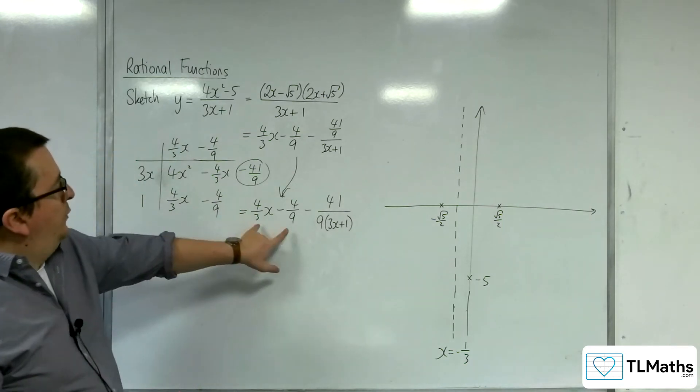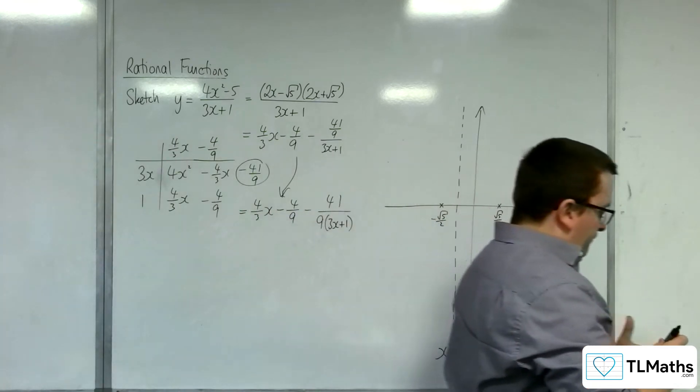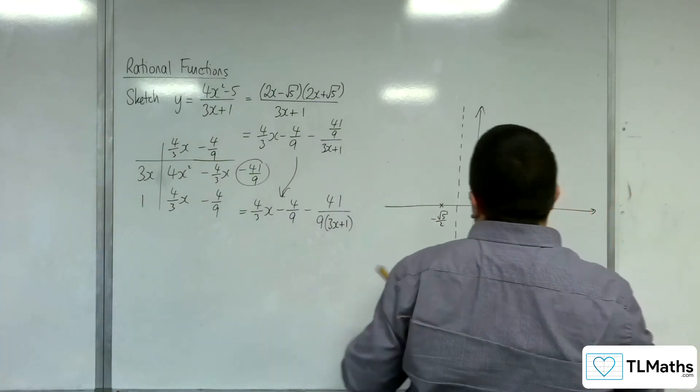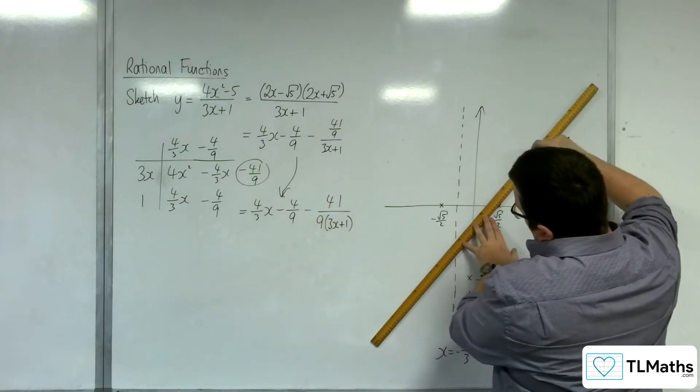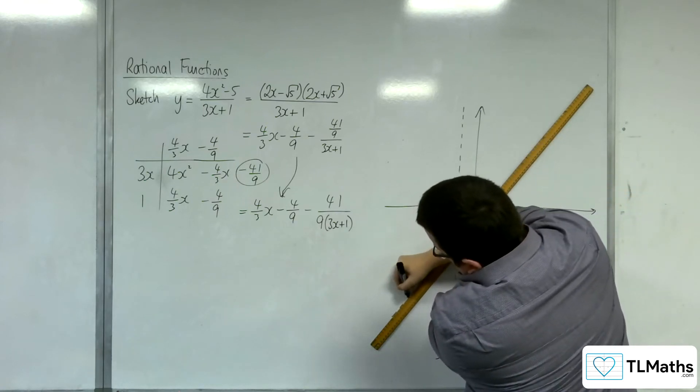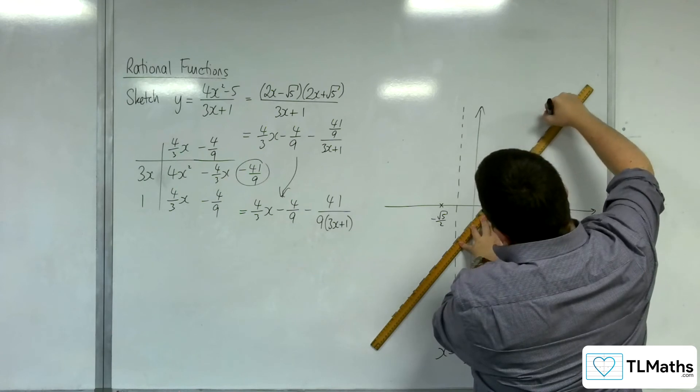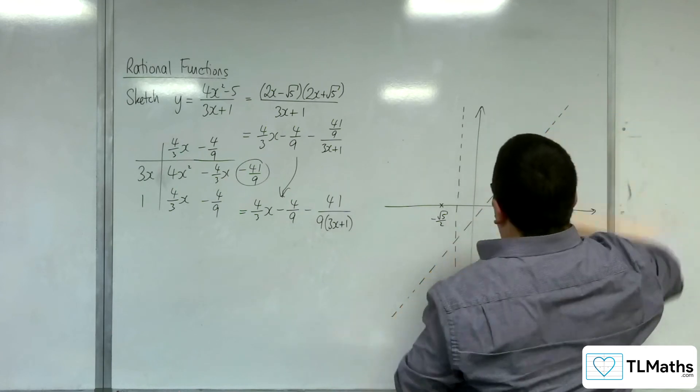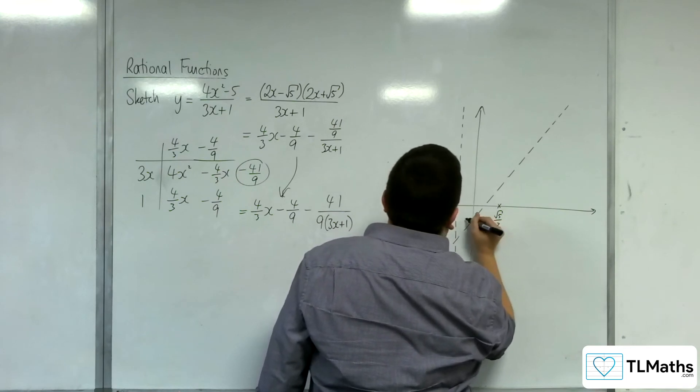So y equals 4 thirds x, take away 4 ninths, is the oblique asymptote. Right. It's going to look something like this.